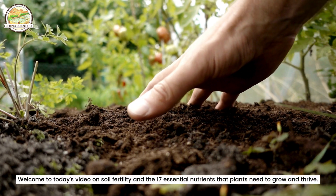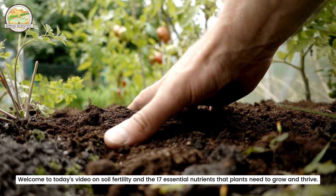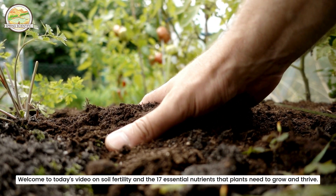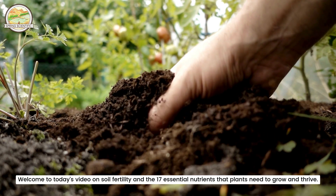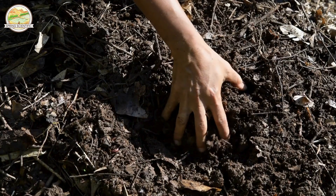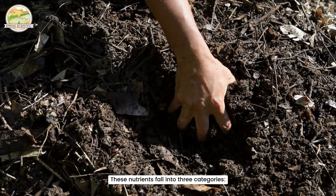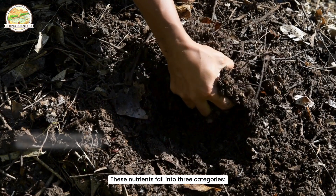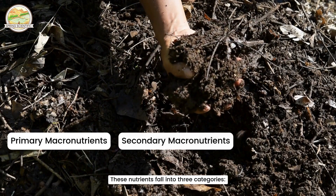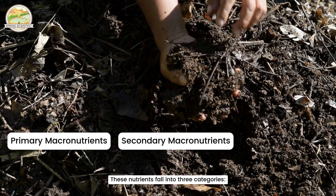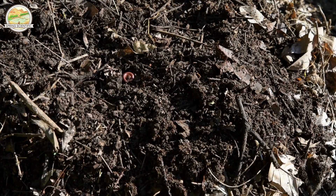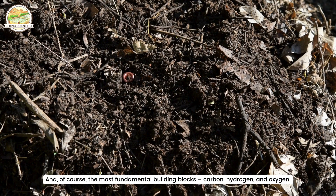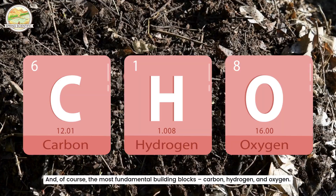Welcome to today's video on soil fertility and the 17 essential nutrients that plants need to grow and thrive. These nutrients fall into three categories: primary macronutrients, secondary macronutrients, and micronutrients. And, of course, the most fundamental building blocks: carbon, hydrogen, and oxygen.